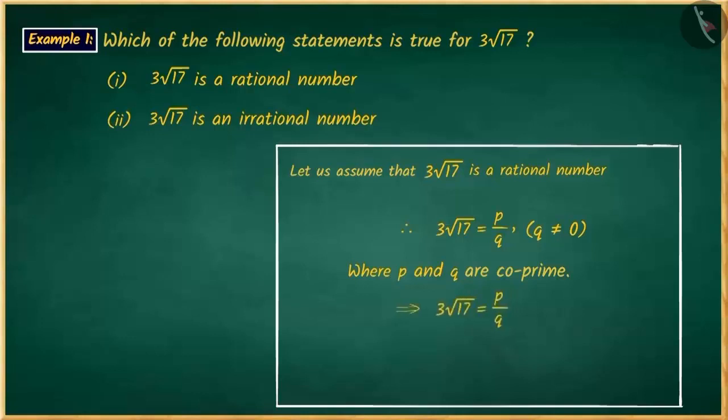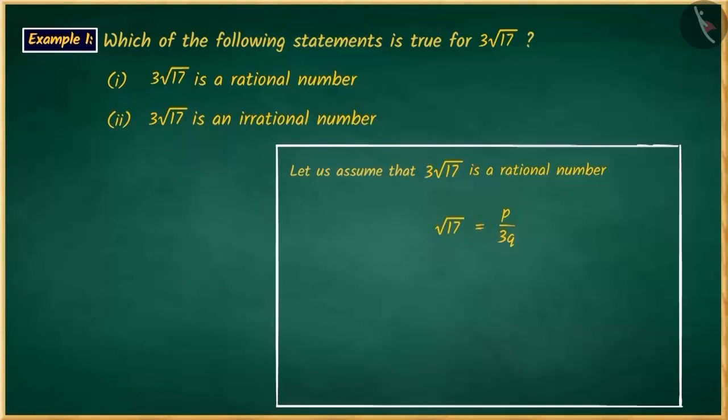If we rearrange this, we will get √17 = p/3q. You may remember that the division of rational numbers is also a rational number. Thus, we can say that since p and q are rational numbers, then the value on the right side, which is p/3q, is also a rational number. Therefore, √17 will also be a rational number.